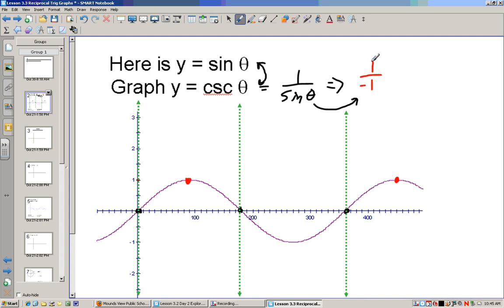Also when sine is negative 1, cosecant is negative 1. So those three points are part of our cosecant graph.